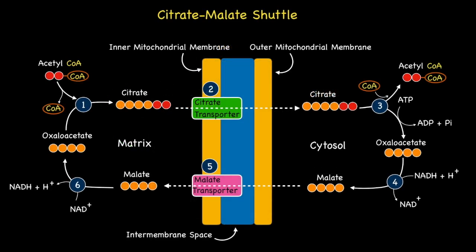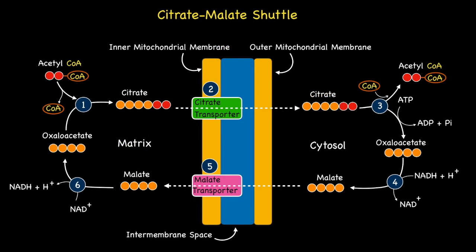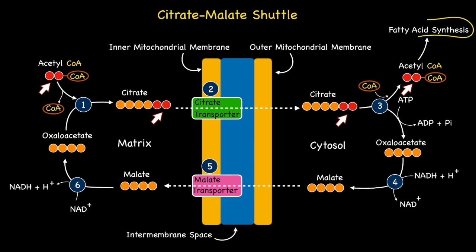So in summary, this whole process allows for the continual transfer of two carbon units of Acetyl CoA originating within the matrix to the cytosol, where they subsequently become available for fatty acid synthesis.